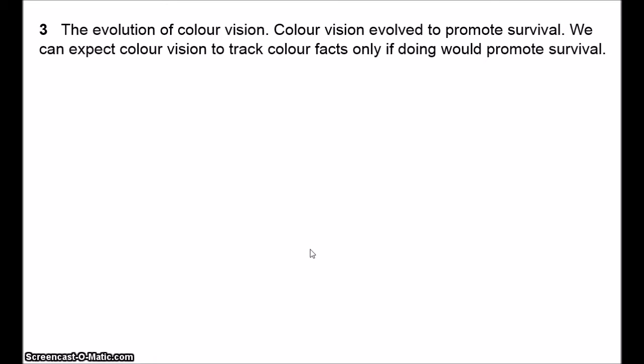So why can some organisms perceive colours? Colour vision presumably evolved to help us discriminate objects, perhaps help us to spot predators, helps us to quickly determine which fruits are ripe for eating, and so on. An important point is that colour vision, like all other traits, did not evolve to help us detect how things actually are, but only to promote survival. Any biological trait has ultimately evolved to promote survival — anything that has arisen by natural selection must have benefited survival.